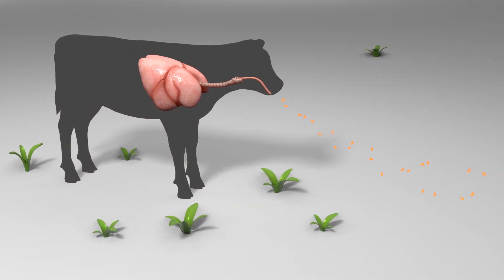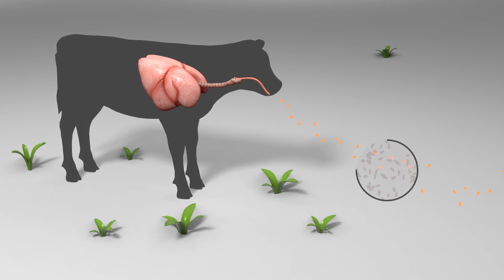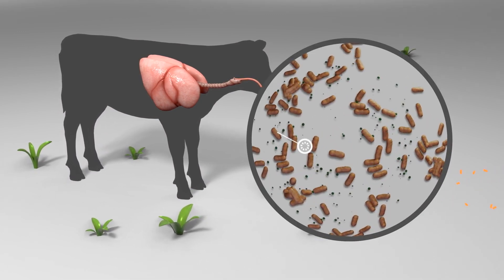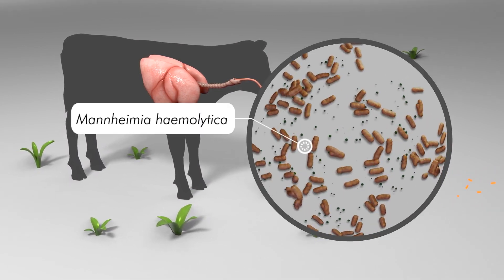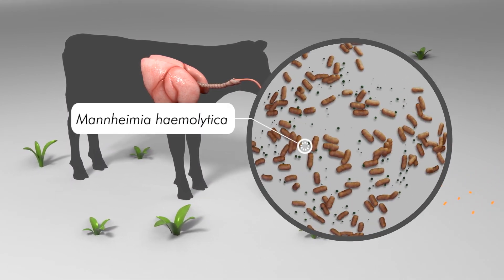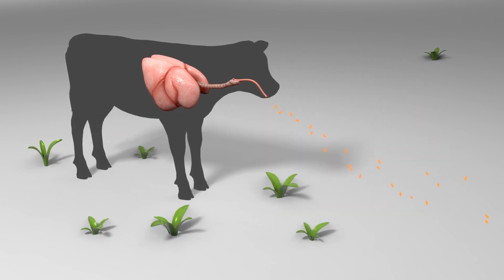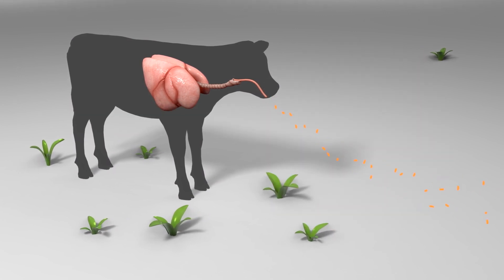Mannheimia hemolytica, one of the bacterial pathogens involved in BRD, enters the nostrils of calves moments after they are born and colonizes their nasal passages.